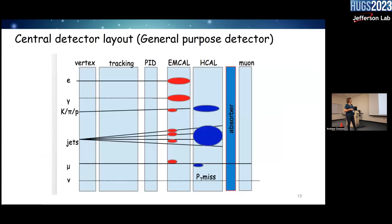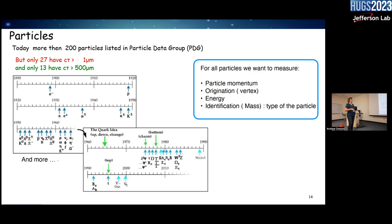Overall, our detector is what we call a general-purpose detector. Like all general-purpose detectors, it has multiple layers: vertex detector, tracking, particle identification, electromagnetic and hadronic calorimeters. We do not have muon detectors planned, but using machine learning techniques we can identify muons by looking at the topology in various subdetectors.